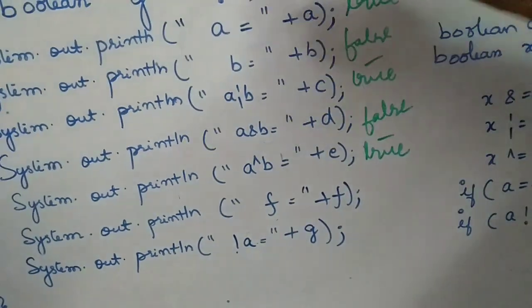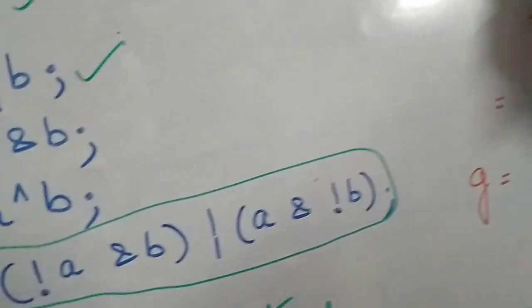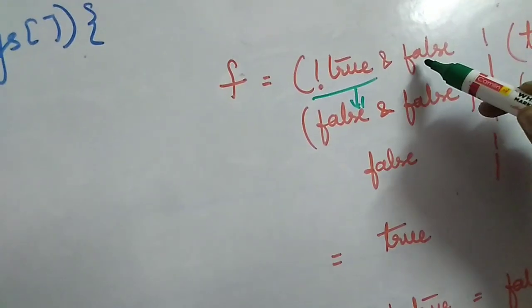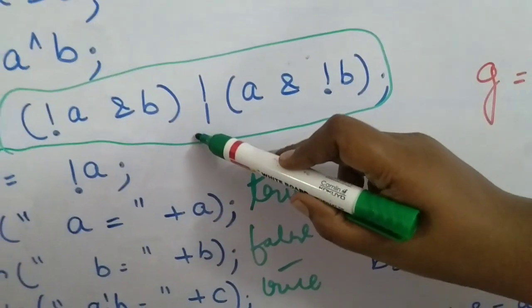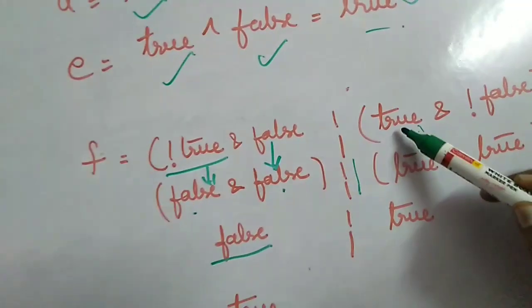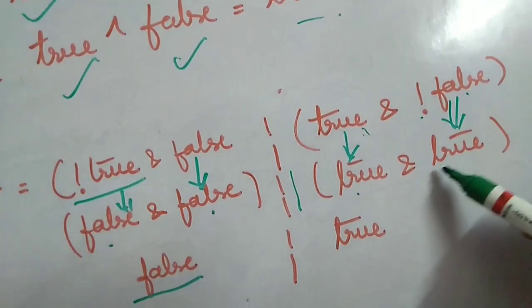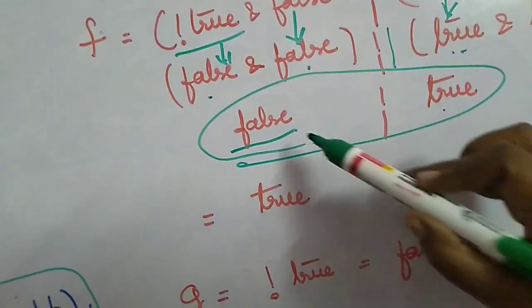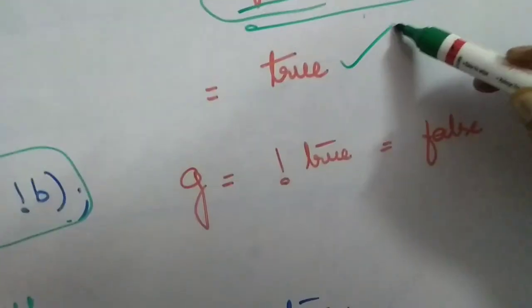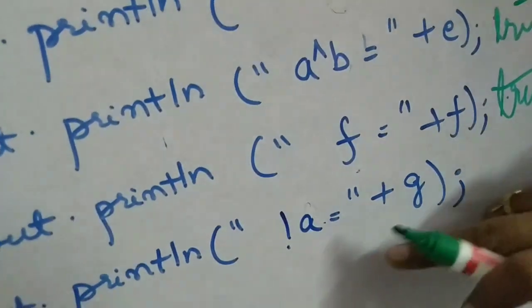Now we calculate the value of F. The expression is (NOT A AND B) OR (A AND NOT B). NOT A results in false, and B is false, so false AND false is false. Then A is true and NOT B — since B is false, NOT B is true — so true AND true is true. Now false OR true gives true. So the value of F will be true.